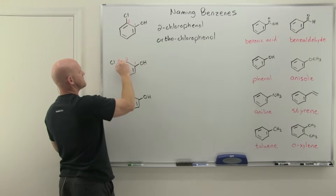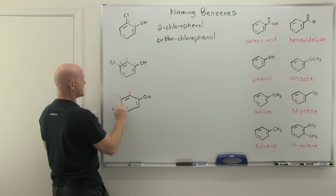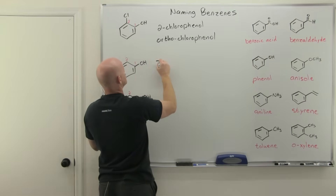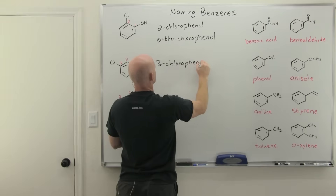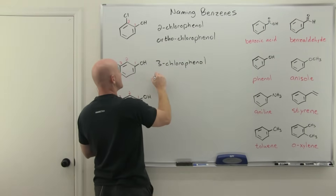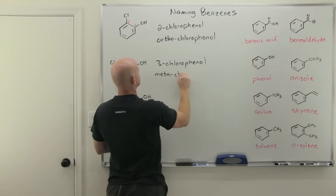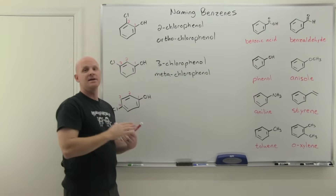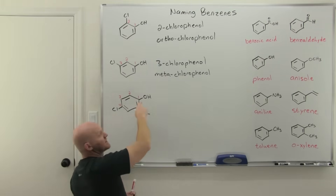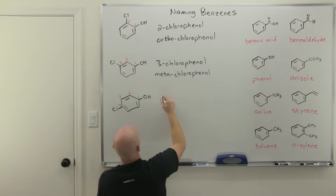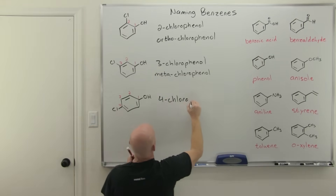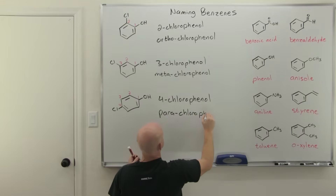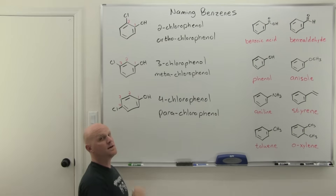We also have a 1-3 relationship and a 1-4 relationship to consider. The 1-3 relationship has a special name too — you could call this 3-chlorophenol, or meta-chlorophenol, often shortened to m-chlorophenol. For the 1-4 relationship, we call that para — so this is 4-chlorophenol, para-chlorophenol, or p-chlorophenol for short.